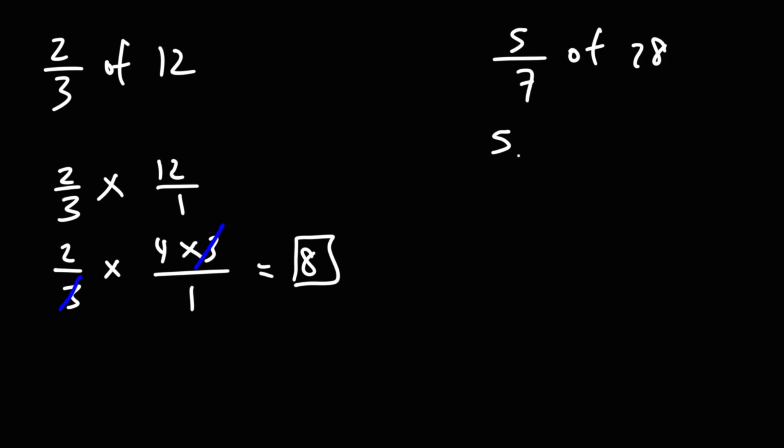For the next example we have 5 over 7 times 28 over 1. 28 we can write that as 7 times 4. And note that we can cancel the 7. So we're left with 5 times 4 which is 20. So that's a quick and simple way of how you could find a fraction of a whole number.